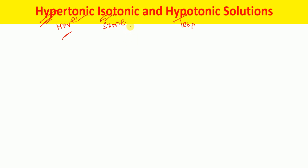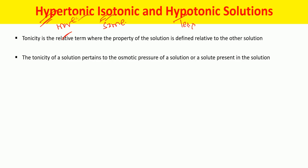Whenever we talk about the tonicity of a solution, tonicity is a relative term — the property of the solution is defined relative to another solution. The tonicity of a solution refers to the osmotic pressure of the solution, or the concentration of the solute present in the solution.